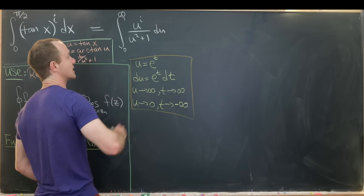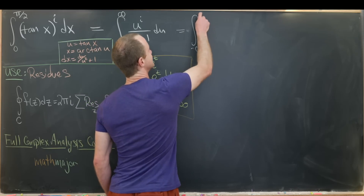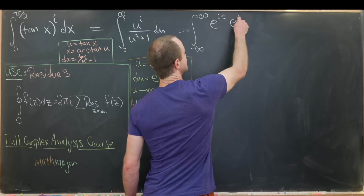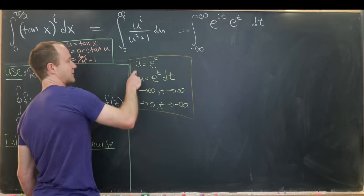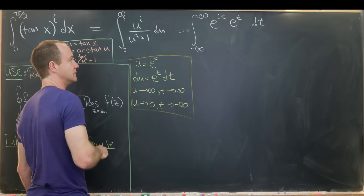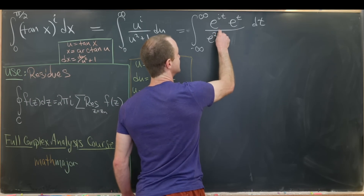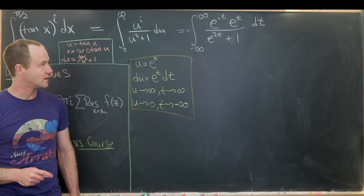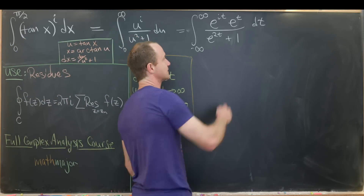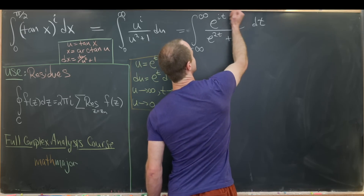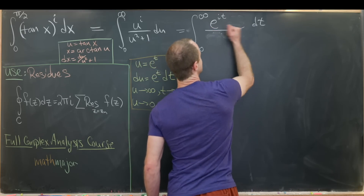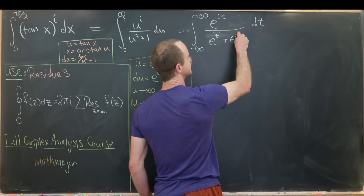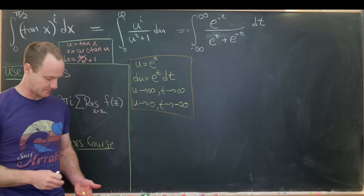This leaves us with the integral from −∞ to ∞ of e^(it) · e^t dt over (e^(2t) + 1). Taking the e^t factor and using it to simplify the denominator changes e^(2t) + 1 into e^t + e^(−t).